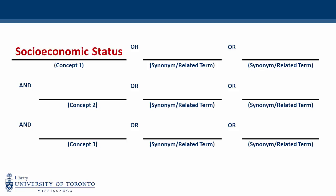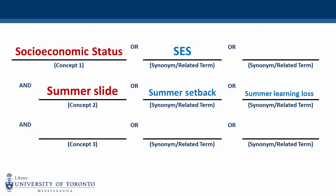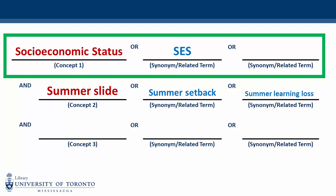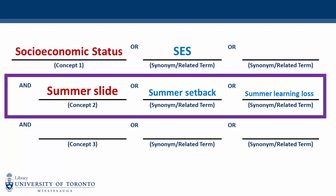To begin, we're going to enter our first keyword, socioeconomic status, in the top row. Our second keyword, summer slide, will be listed in the second row. Once you've entered your keywords, complete the table by entering your synonyms and related terms. In our example, you'll see that our synonym SES is listed next to socioeconomic status, while summer setback and summer learning loss are entered in the same row as summer slide.